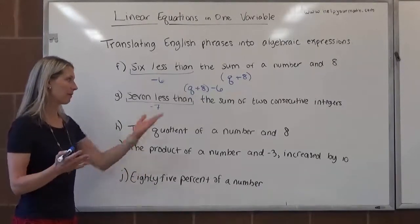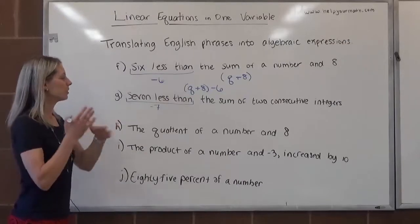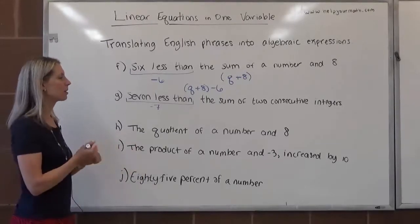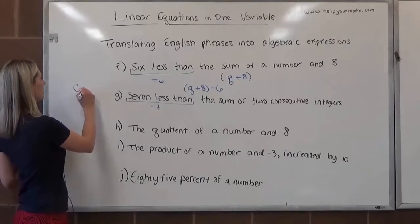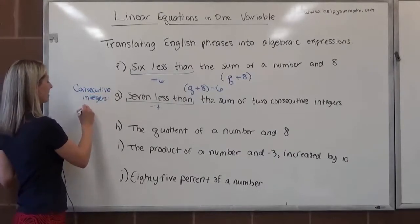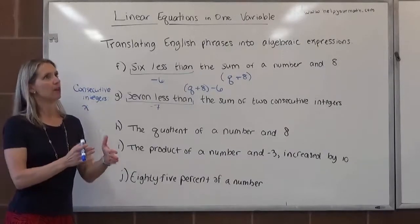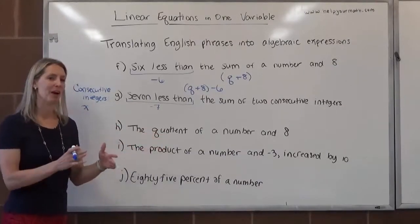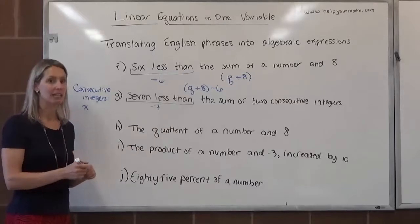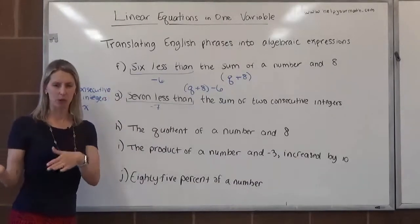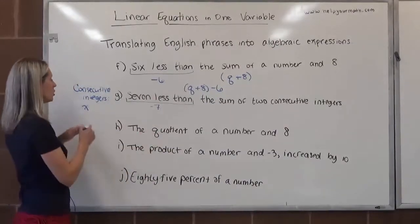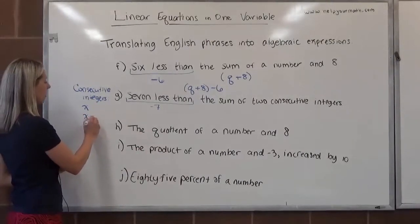If we don't know what the first one is, however, like we don't in letter G, we have to use a variable to represent one of the integers. Usually we choose to represent the smaller one. So maybe we say, I'm going to call the first consecutive integer, maybe I call the first one x. Well, what's the relationship between the examples I gave? We'll use 20 and 21. If I'm representing 20 with x, then how would I get 21? Well, that would be x plus 1. I think another example I gave was negative 41 and negative 40. If I start out where x is negative 41, how would I get to negative 40? It would be x plus 1. So the first consecutive integer is x, and then the next one would be x plus 1.